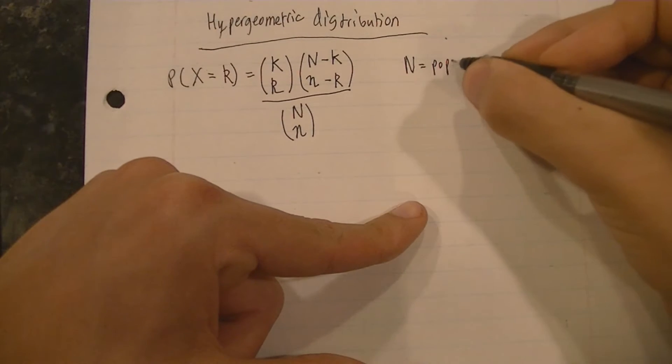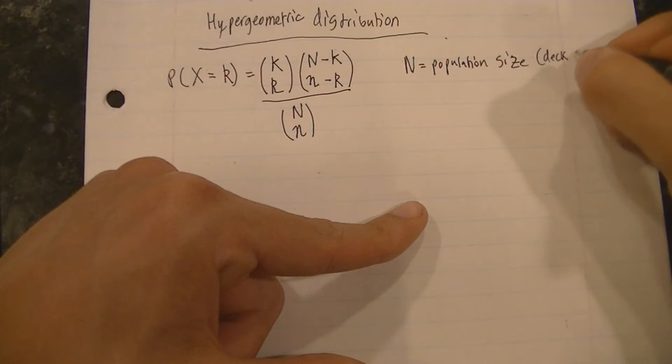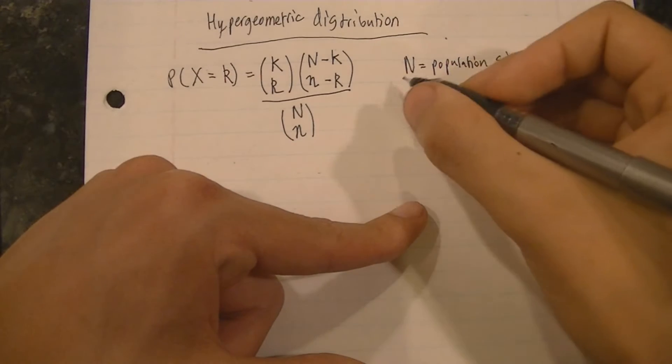So capital N is the population size, and in our case this is the deck size, which is 30.